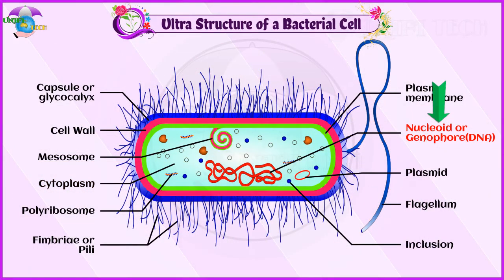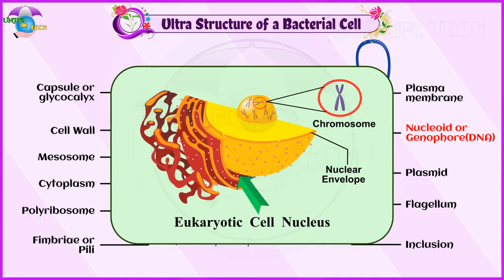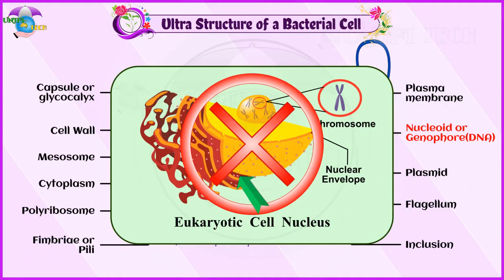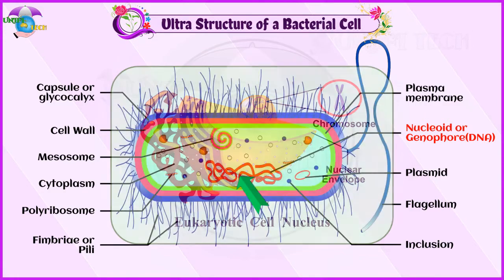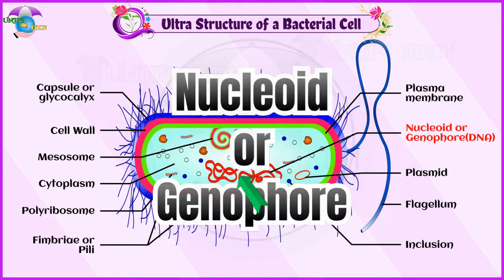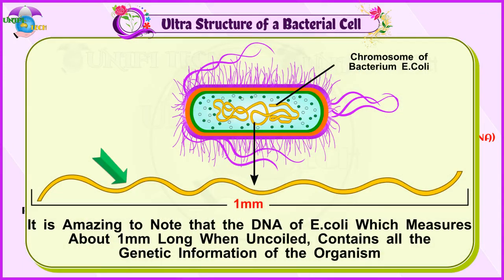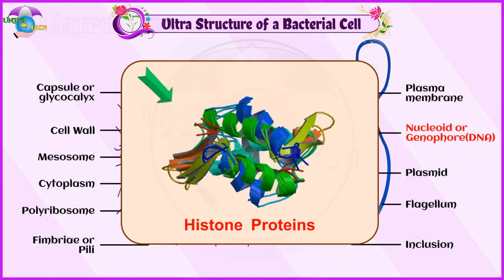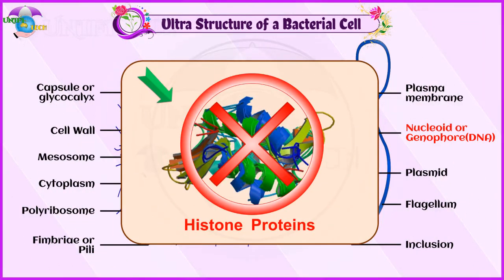Bacterial chromosome: The bacterial chromosome is a single circular DNA molecule, tightly coiled, and is not enclosed in a membrane as in eukaryotes. This genetic material is called the nucleoid or genophore. It is amazing to note that the DNA of E. coli, which measures about 1 mm long when uncoiled, contains all the genetic information of the organism.